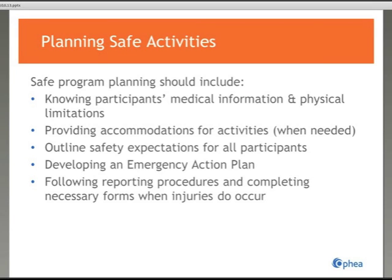For safety expectations, communicate to the participants the risk associated with the activity and how to minimize those risks, along with expectations for safe conduct and good behavior. For first aid, check that a first aid kit is accessible and that there is a suitable means of communication on site. For emergency action plans, be knowledgeable of and implement the site's emergency action plan, suspected concussion protocol, and universal precautions when dealing with situations involving blood or other bodily fluids. Key factors in planning safe activities are addressed in more detail in the Ontario Safety Guidelines.